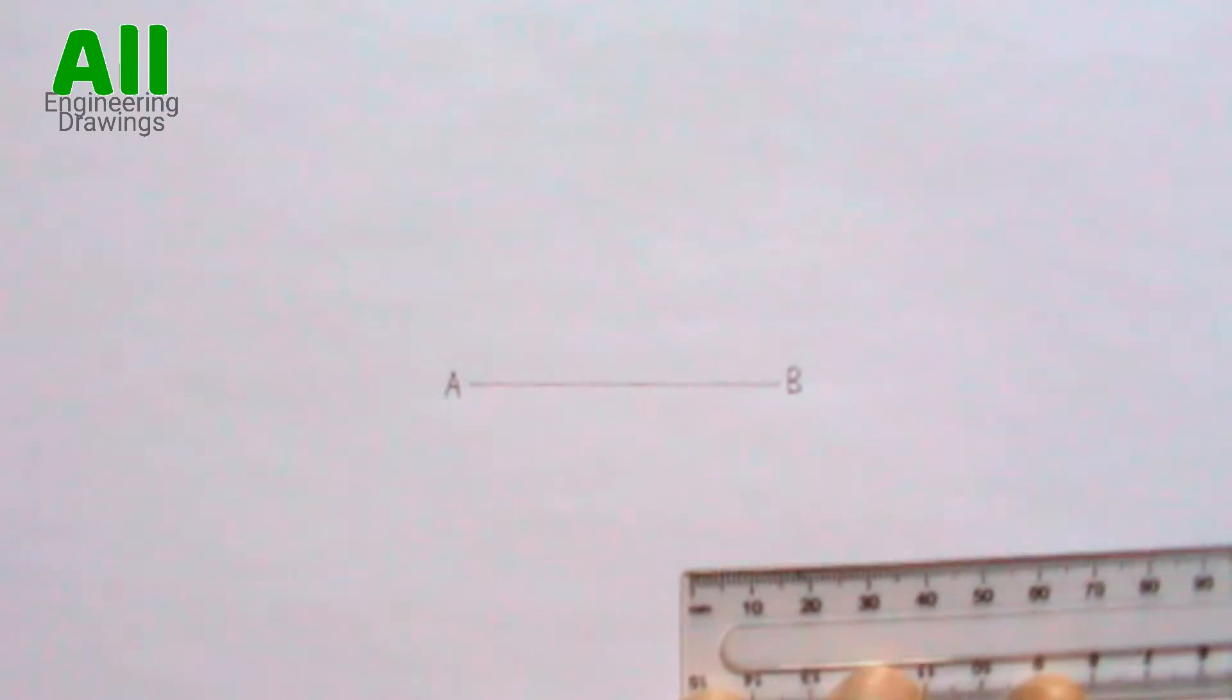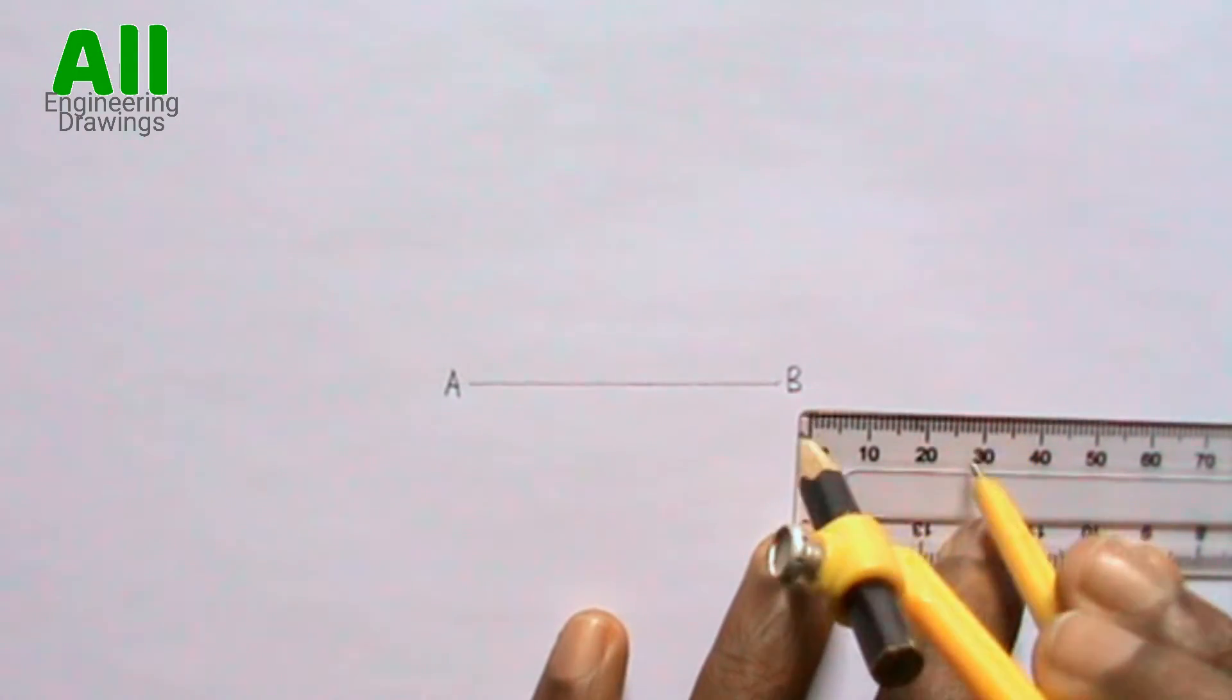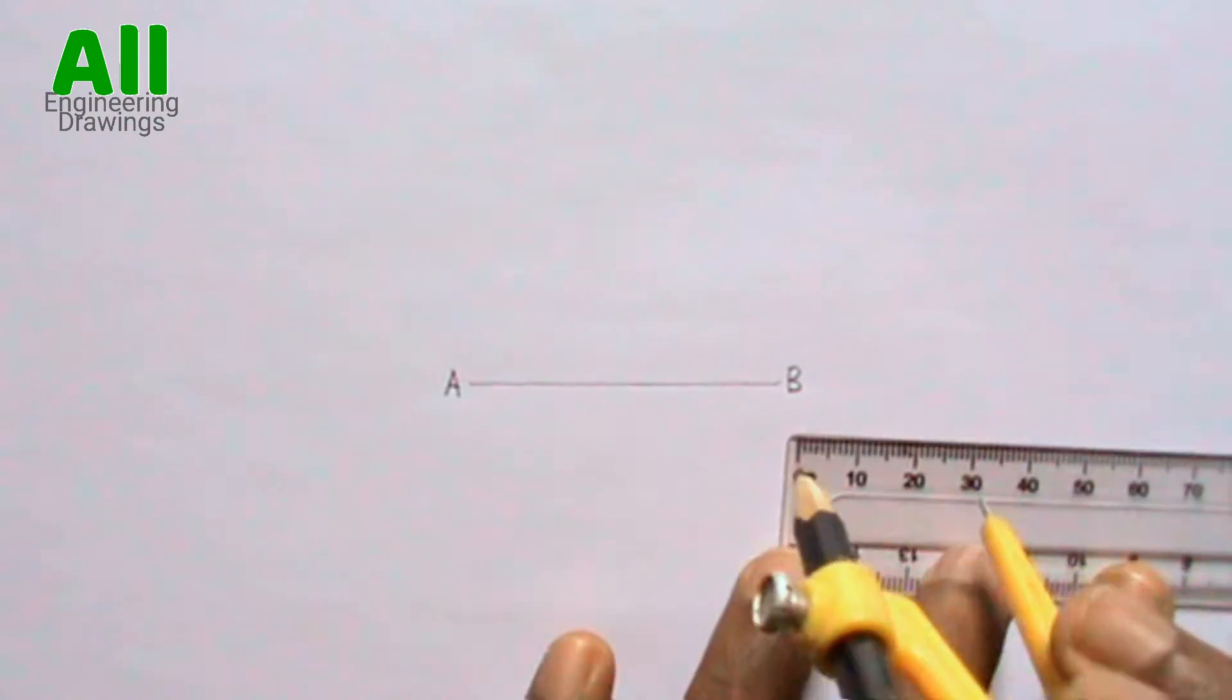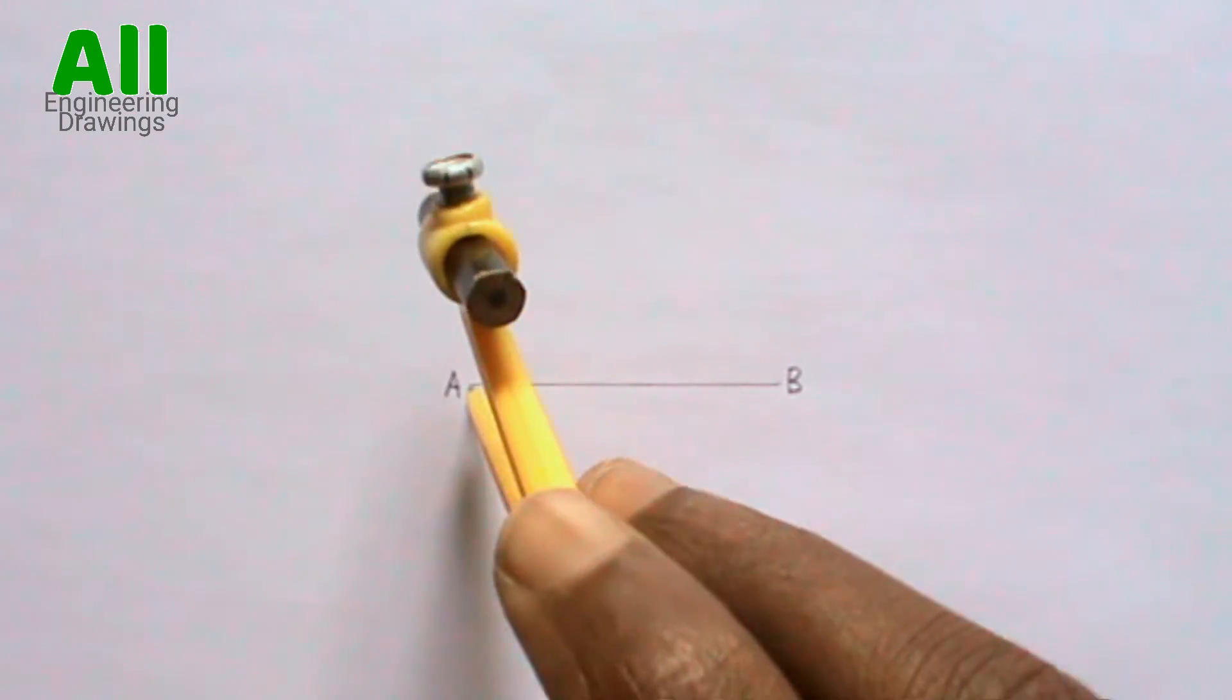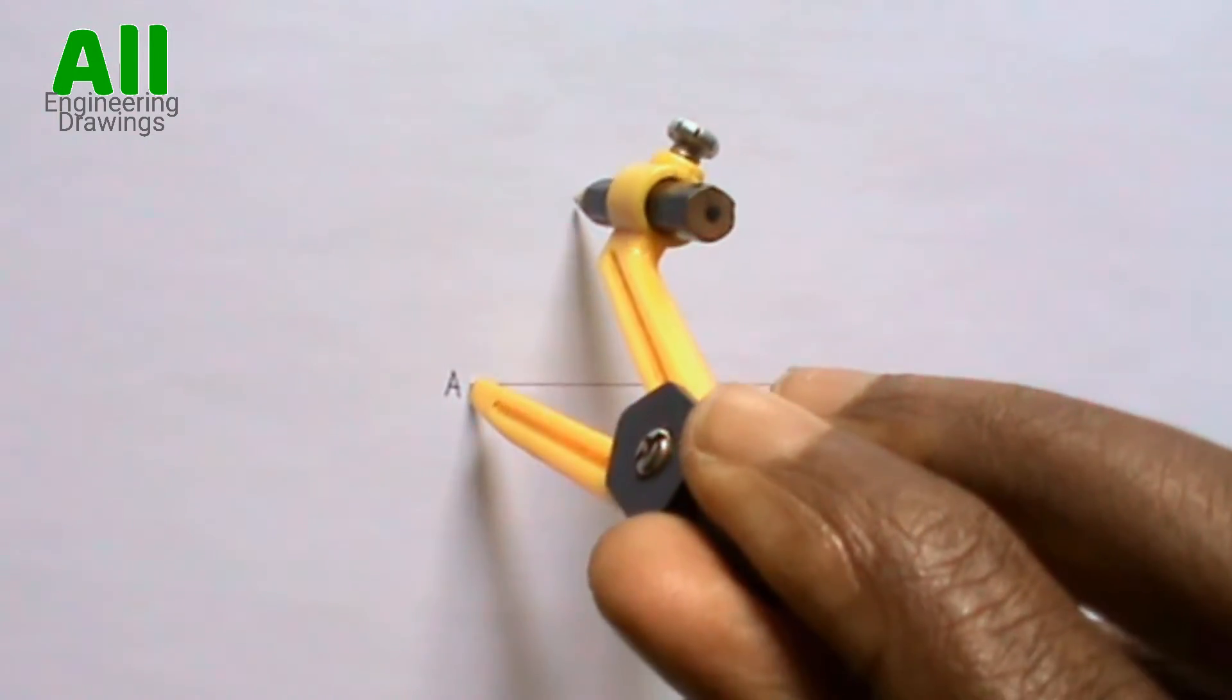Now, extend your compass to the length of side given. Then place your compass on point A. Cut arc this way.